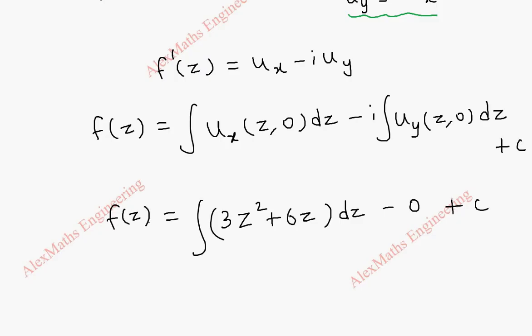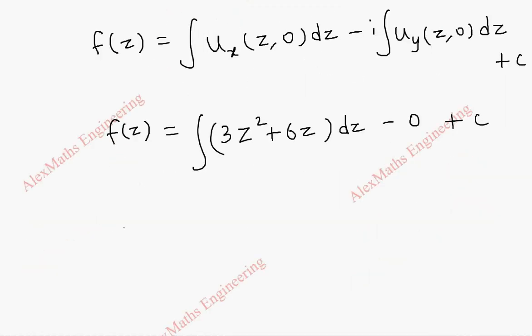So this is our f(z). When we integrate this, we get 3z³ divided by 3 plus 6z² divided by 2 plus c.